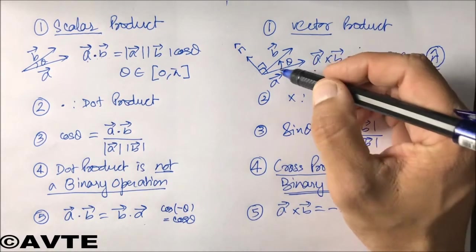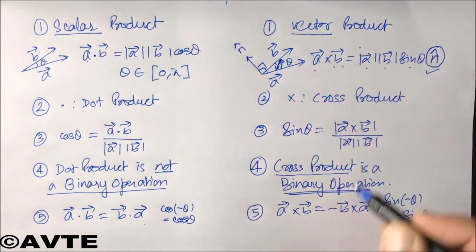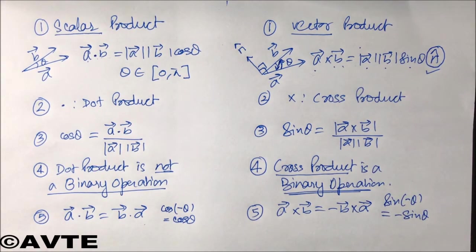But in case of cross product, if we change the direction from anticlockwise to clockwise, it becomes minus of b cross a.